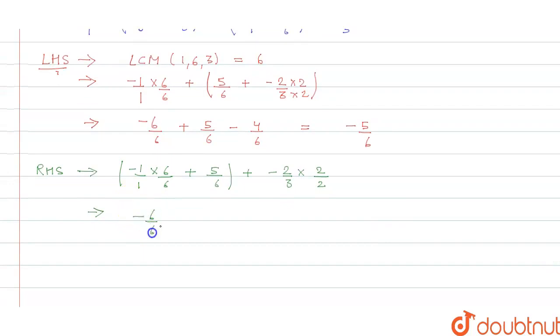So minus 6 by 6 plus 5 by 6 plus minus 4 by 6 equals minus 1 by 6 minus 4 by 6, and that is equals to minus 5 by 6.